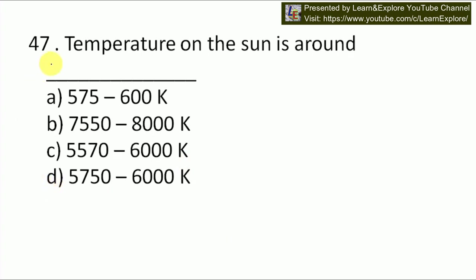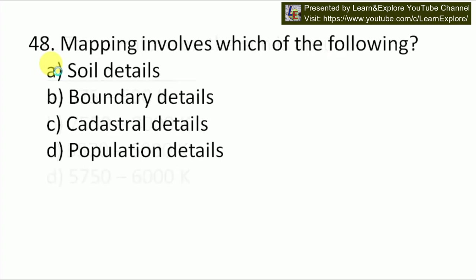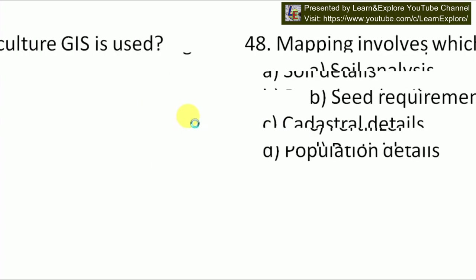I am leaving the question about temperature on the sun for you to solve — please write your answer in the comment box. Next question: mapping involves which of the following — soil details, boundary details, cadastral details, or population details? Our answer will be C — mapping involves cadastral details.